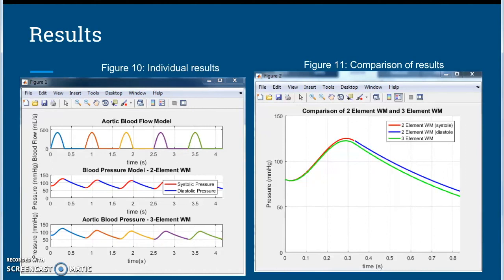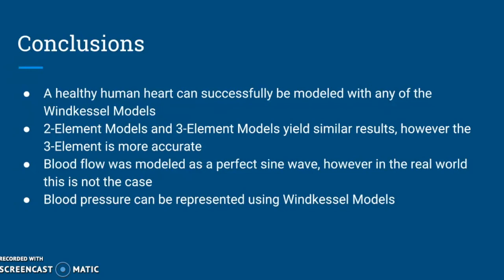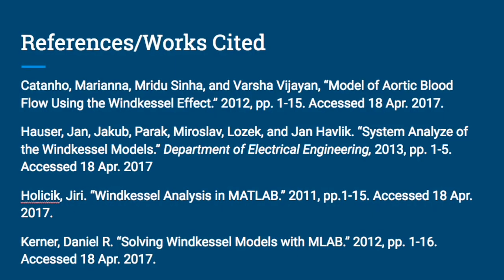Figure eleven shows a comparison of the two-element model and the three-element model over one cardiac cycle. It seems as though the models are very close to being the same, but since the three-element model takes into account an extra physiological factor, the results are slightly more accurate. Overall, a healthy human heart can be successfully modeled with any of the windkessel models. Two-element and three-element models yield similar results; however, the three-element model is more accurate. Blood flow in this simulation was modeled as a perfect sine wave, though in the real world this is not the case. Blood pressure can be accurately represented using windkessel models.